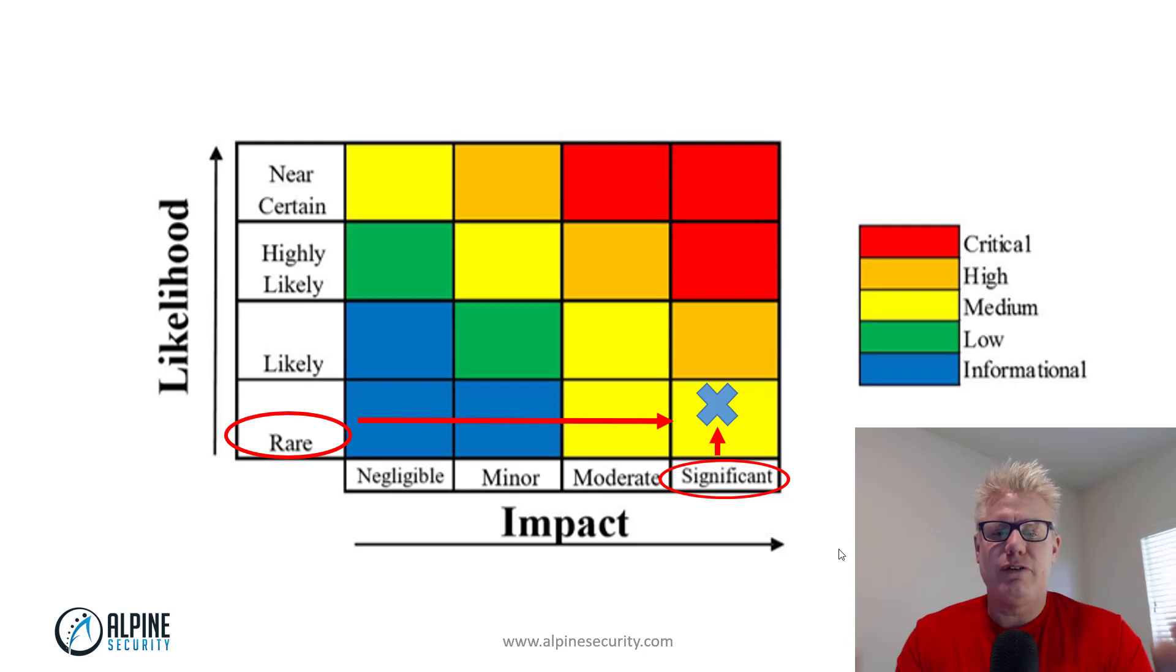So the intersection of the rare likelihood and the significant impact is where this x is, which is a yellow rating or medium. So the overall risk is medium. So even though the impact is significant, because the likelihood is rare, the overall risk is medium.